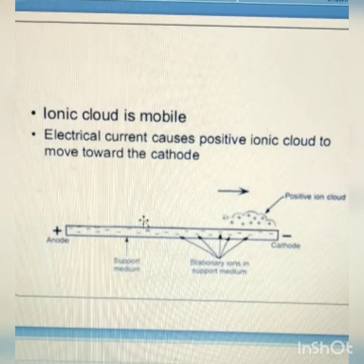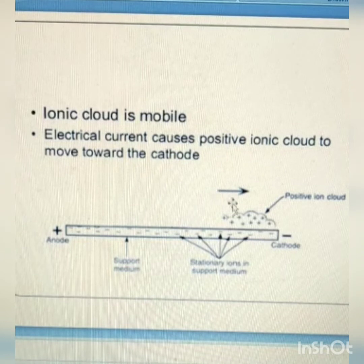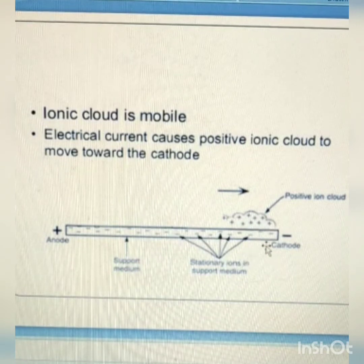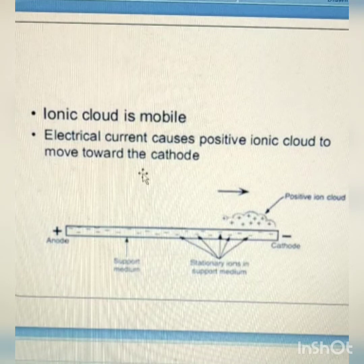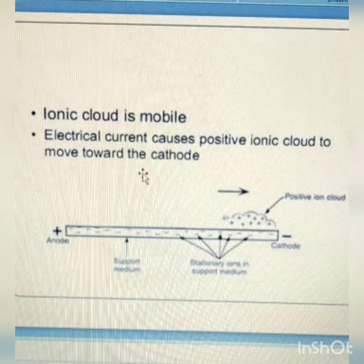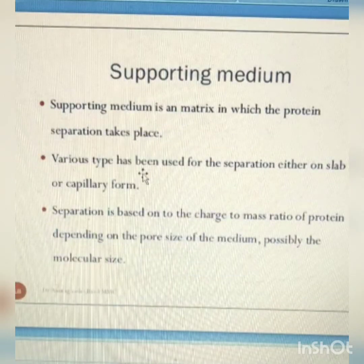The ionic cloud is mobile. In the supporting medium, the positively charged ions move towards the cathode, that is the negative pole. The greater the charge of the molecule, the greater the force applied by the electrical field, and therefore the molecule will move relative to its mass through the supporting medium. Electrical current causes a positive ionic cloud to move toward the cathode, that is the negatively charged pole.